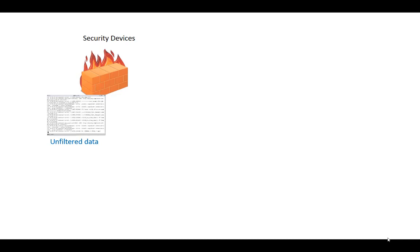When I looked at the difference between data and information in terms of security devices, you have unfiltered log data — there's scads of it. Some of it requires an expert to read and by itself it doesn't mean anything; it's a building block for something greater. But then you have particularly smart data like your BlueCoat, your FireEye, Palo Alto — things that will take a look at events going across the firewall or a proxy and say they've noticed a pattern suggesting a denial of service or a malware attack.